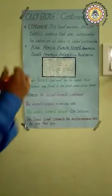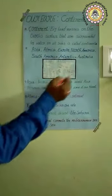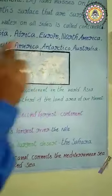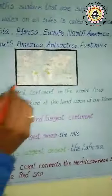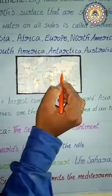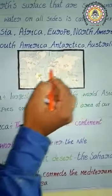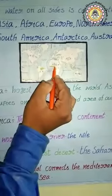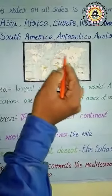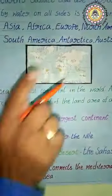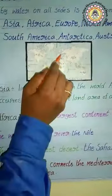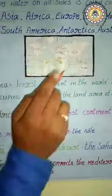Let us see the seven continents on the world map. Here is the big land mass — it is Asia. Next, beside Asia, we have Africa, and next is Europe. Europe and Asia together form a single land mass, while all the remaining continents are separated.